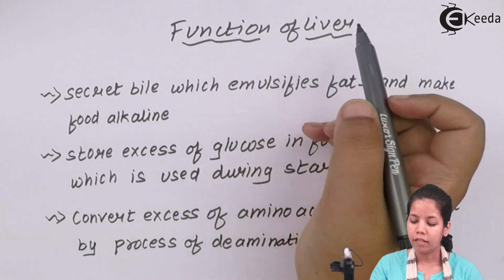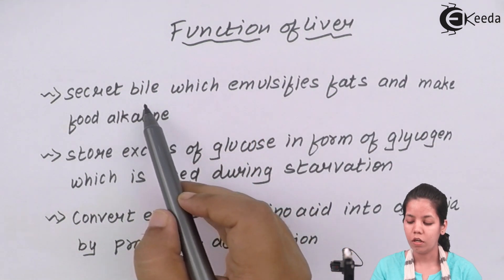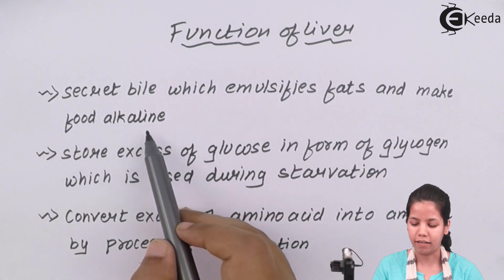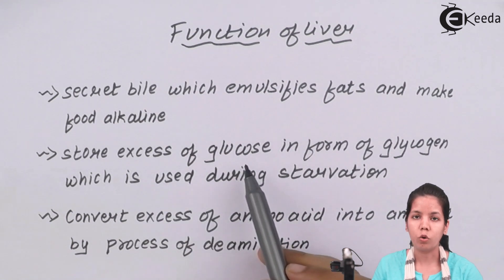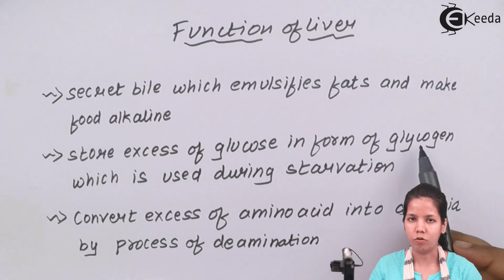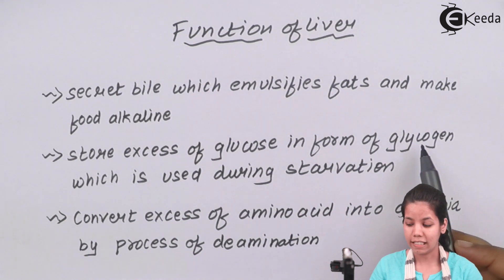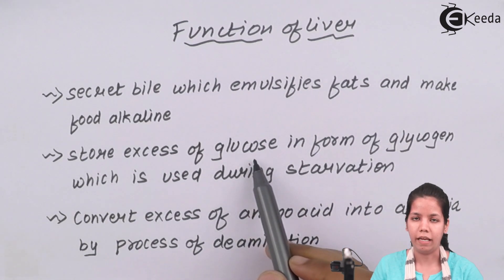Functions of liver: The major function of the liver is to secrete bile or bile juice, which helps to break down fat molecules and make food alkaline. Along with that, the liver helps to store excess glucose obtained from food in the form of glycogen in your muscles. Whenever you are starving or do not have enough glucose in your body, this glycogen is converted back into glucose to obtain energy.